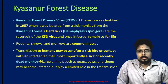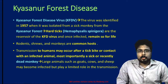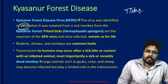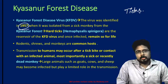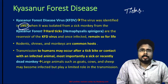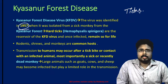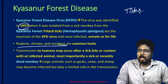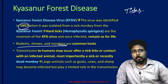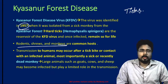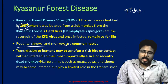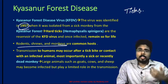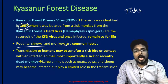Next, Kyasanur forest disease, which has been found in Kerala. It is a disease that spreads through ticks and is mainly found in monkeys. It was first identified in 1957 and was isolated from sick monkeys in the Kyasanur forest, after which it is named. Hard ticks are the reservoir of this virus, while rodents, shrews, and monkeys are common hosts. Transmission to humans also takes place when ticks that have bitten infected monkeys then bite humans. Large animals such as goats, cows, and sheep may also become infected.